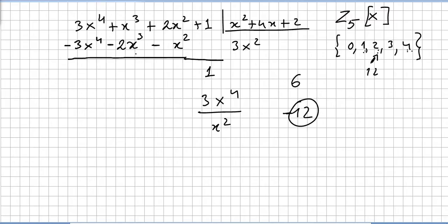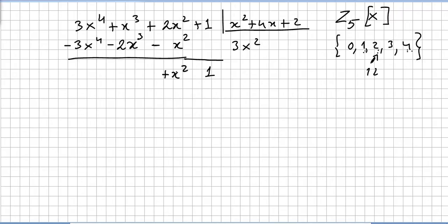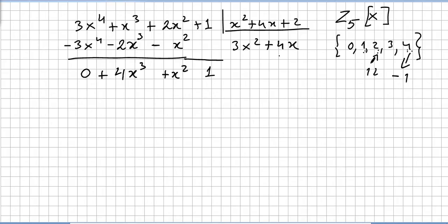Here it should be 1, so 2 minus 1 is 1, giving plus x squared. And 1 minus 2 is minus 1; in Z5, minus 1 is 4, so this will be 4x cubed, and this will be 0. We keep dividing: now 4 divides 1, giving plus 4x.